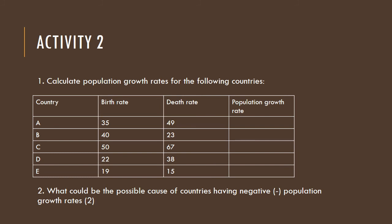Number one: calculate the population growth rates for the following countries — Country A, B, C, D, and E. Each country has a birth rate and a death rate. Do your calculations to find the population growth rate for each country from A through to E. Number two: What could be the possible cause of countries having a negative population growth rate?